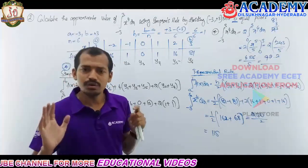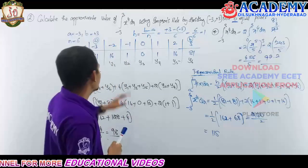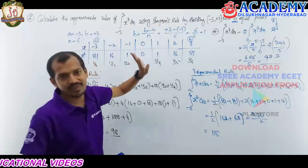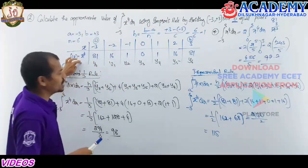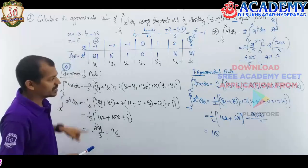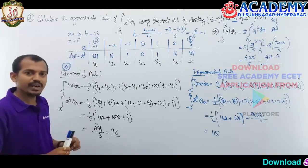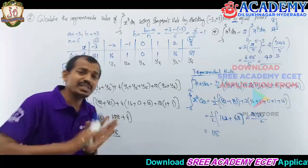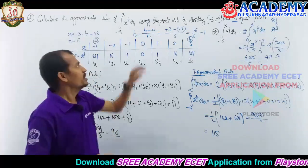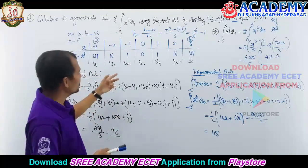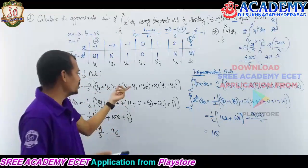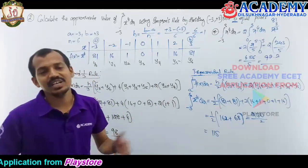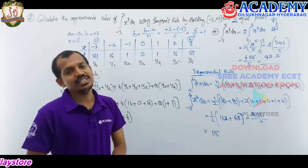Sometimes questions give all data — a, b, and n — from which we find h and then the x and y values. But sometimes questions directly give x and y coordinates without specifying the function. In those cases, we can still substitute the given coordinates into whichever rule is required to get the answer.